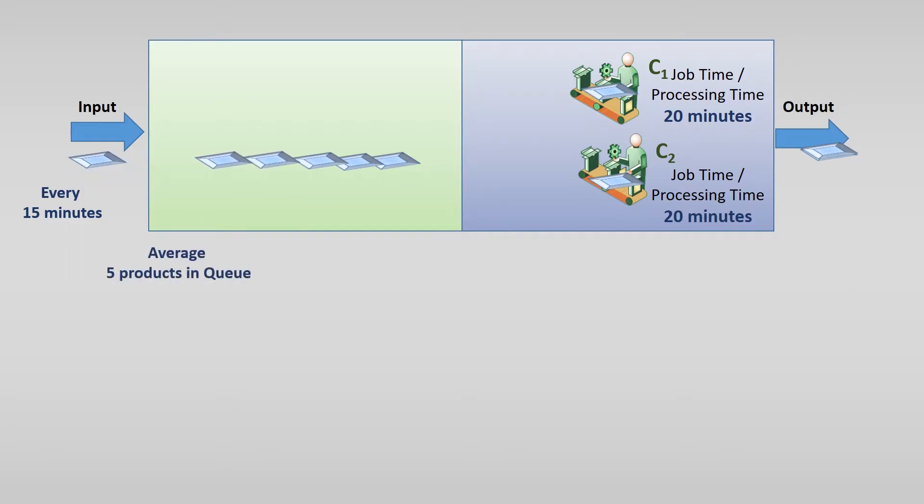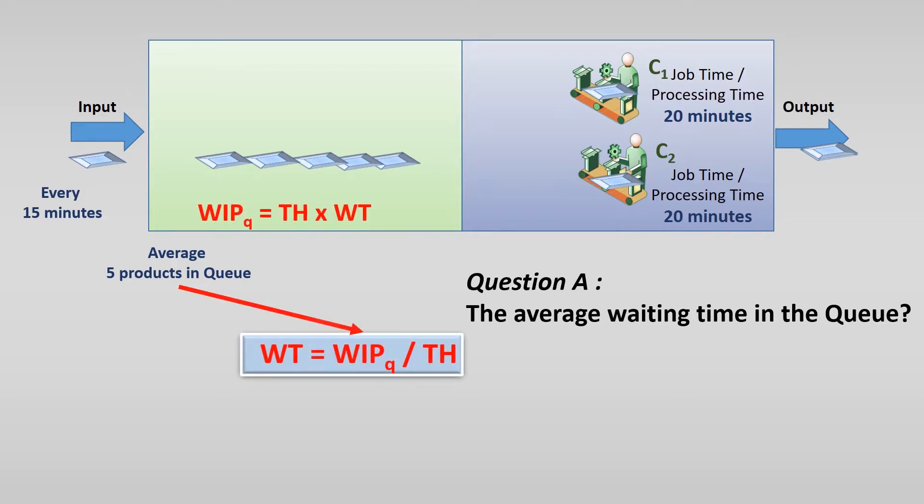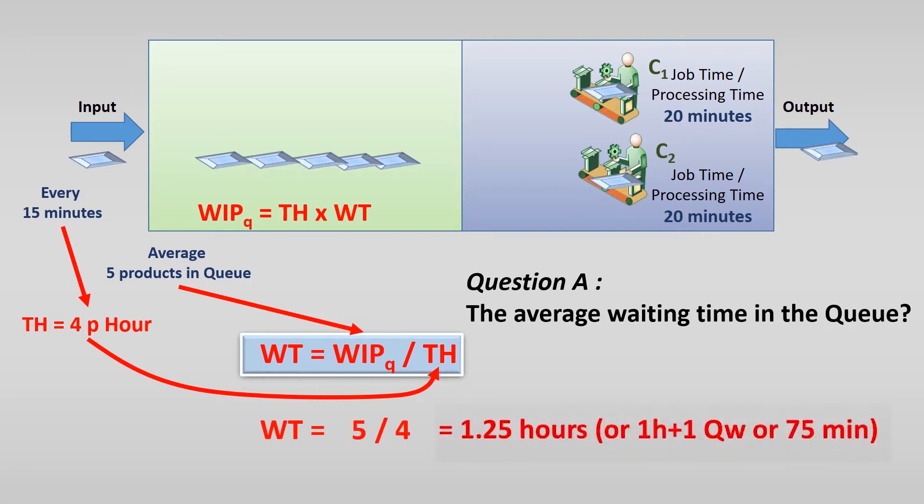Let's start with the first question. What is the average waiting time in the queue? We use Little's Law for this. We need the number of products in the queue, this is the work in progress and this is 5. And we need the throughput, this is every 15 minutes or 4 per hour. So if we fill in the numbers, the average waiting time in the queue is 1.25 hours.